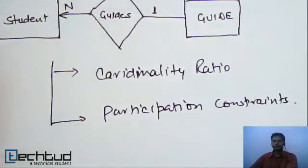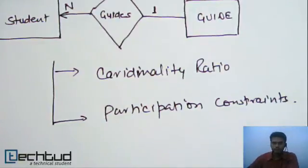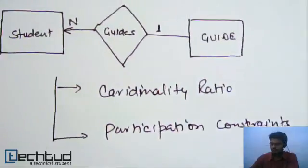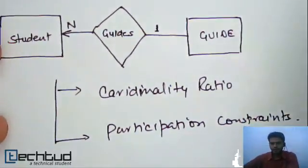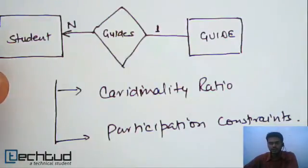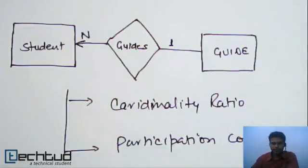Mainly these two types of relationship constraints we have in ER model. So we will study them one by one. For this lecture let's stop it here. In the next lecture we will study dedicatedly cardinality ratio and then in another lecture we will go through the participation constraints. See you in the next lecture, thank you.